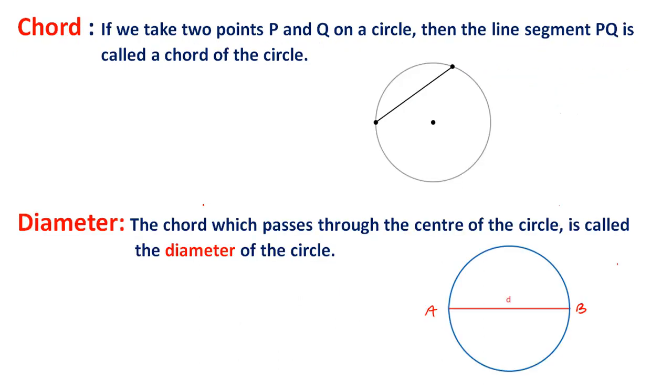If we take two points, say P and Q on a circle, then the line segment PQ is called a chord of the circle.